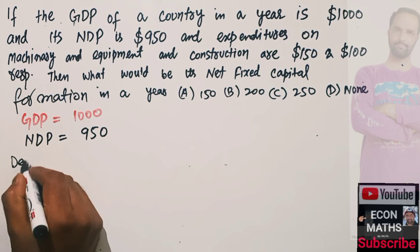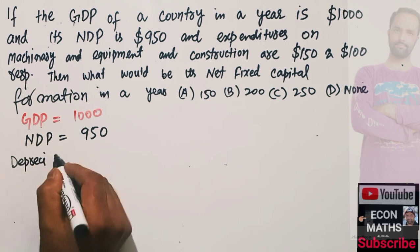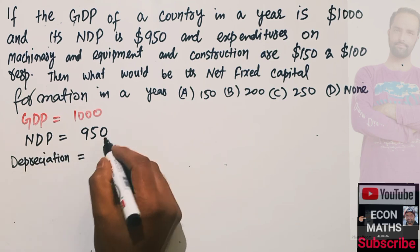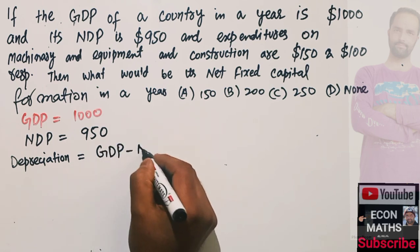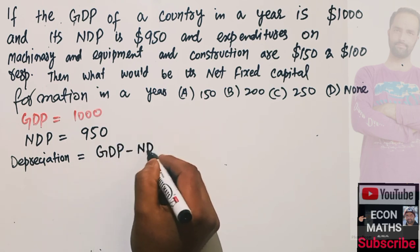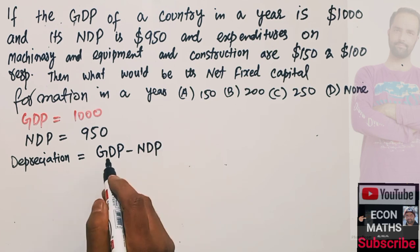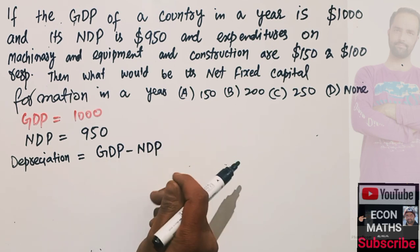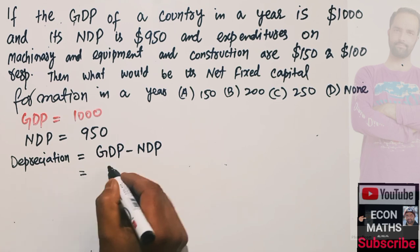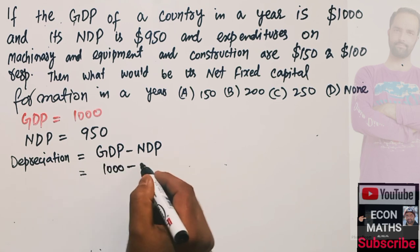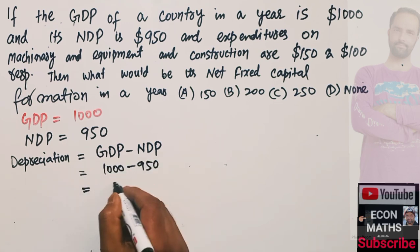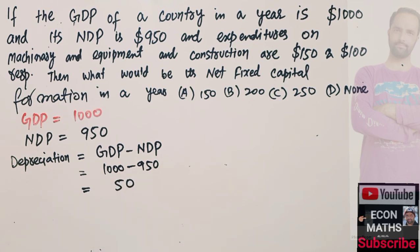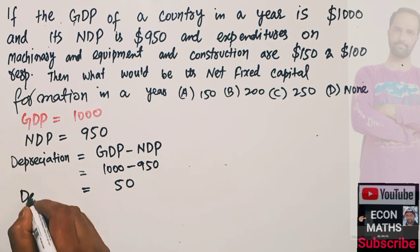First, we need to find the depreciation. Depreciation is simply equal to gross domestic product minus net domestic product. The difference between gross and net domestic product gives us the depreciation, so we have 1000 minus 950, which comes out to be $50 as the depreciation.